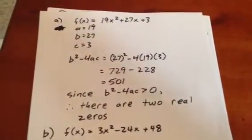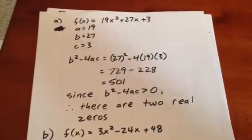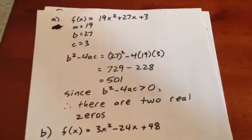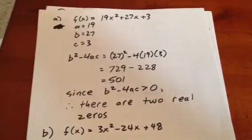We see that a = 19, b = 27, and c = 3. This means b² - 4ac, the discriminant, equals 501. Since b² - 4ac is greater than zero, there are two real zeros in this case.